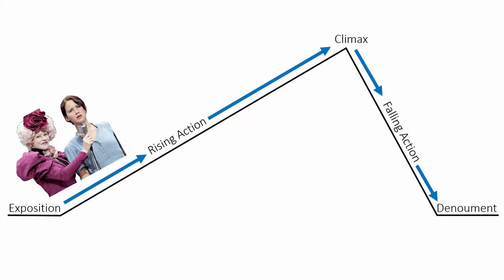Using The Hunger Games as our example, the exposition or introduction is everything that takes place up until the reaping. We're introduced to Katniss, her family, Gale, and the setting of District 12. We learn a little bit about The Hunger Games and the upcoming reaping. Then the reaping is the inciting incident or catalyst that moves us forward into the rising action.